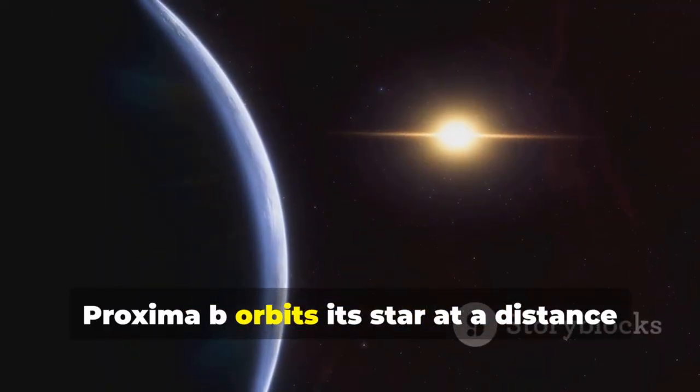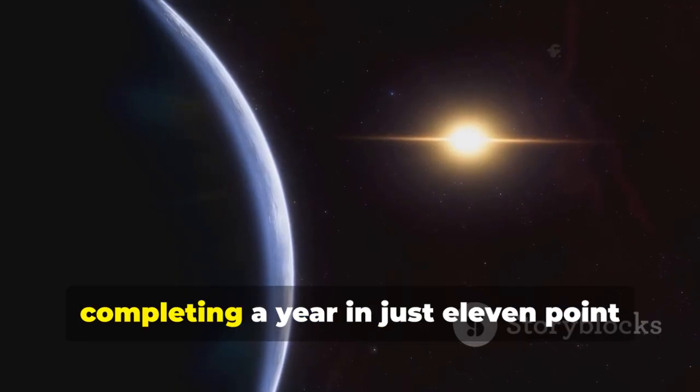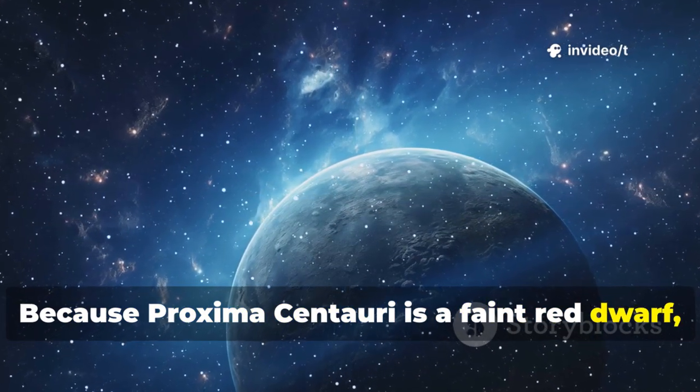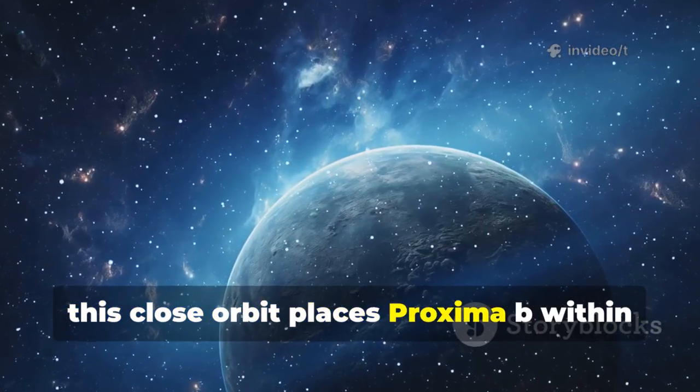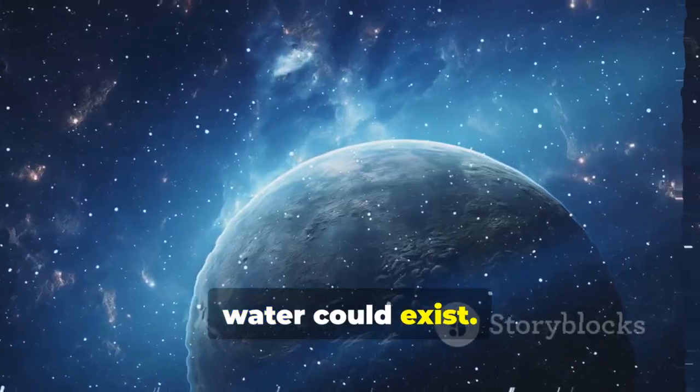Proxima b orbits its star at a distance much closer than Mercury orbits our Sun, completing a year in just 11.2 Earth days. Because Proxima Centauri is a faint red dwarf, this close orbit places Proxima b within the star's habitable zone, where liquid water could exist.